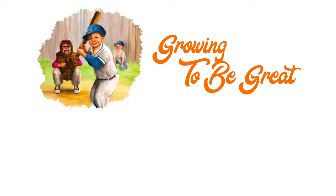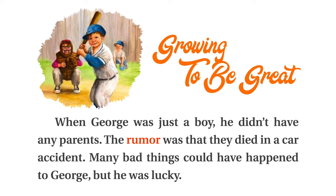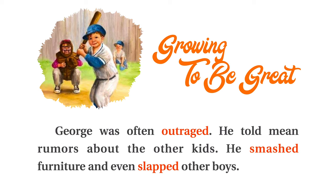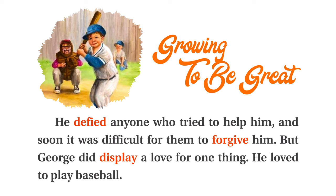Growing to be Great. When George was just a boy, he didn't have any parents. The rumor was that they died in a car accident. Many bad things could have happened to George, but he was lucky. He was sent to live alongside other children without parents. There were kind people to assist George and help him go forward with his life. However, he was a pessimistic and mean little boy. George was often outraged. He told mean rumors about the other kids. He smashed furniture and even slapped other boys. He defied anyone who tried to help him, and soon it was difficult for them to forgive him. But George did display a love for one thing.